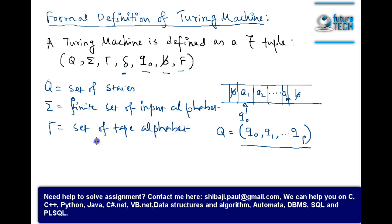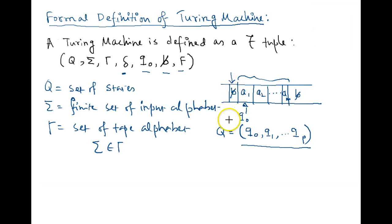Now Sigma is contained in Gamma obviously because the input alphabet is also kept in the tape, so the tape may contain a blank space. So this blank space is also part of the tape alphabet and this input symbols are initially kept in the tape and the Turing machine can write something into the cell.